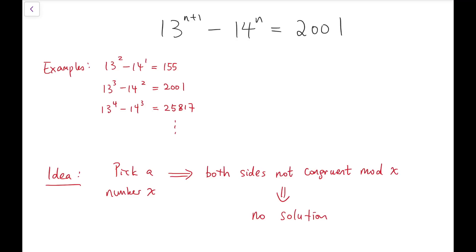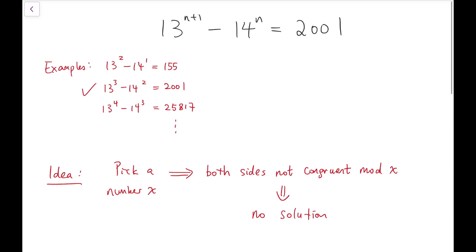Now the equation becomes 13 to the power of n plus 1 minus 14 to the power of n equals 2001. We can try a few values of n, and know that n equals 2 is the solution, and it's quite likely that there is no other solution, because you can see that the value just keeps increasing, and it goes very far away from 2001.